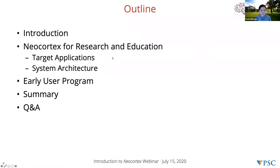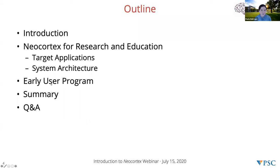So let's get started. This is our outline. We are going to have an introduction covering the context and environment in which NeoCortex was designed and envisioned, then the motivation — why NeoCortex and where do we see it helping our research community. Then we'll introduce NeoCortex in more detail and the kinds of applications we expect to target. Nick will do a deeper dive on system architecture. Next, we'll talk about the early user program, which is the way each of you can be part of this project. Later we'll have a summary and ideally a 20-minute Q&A period.